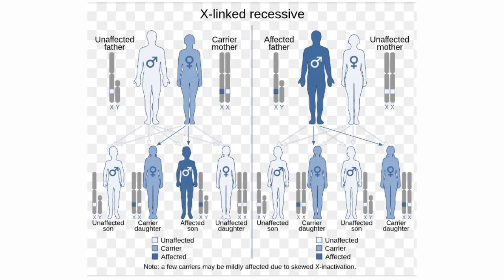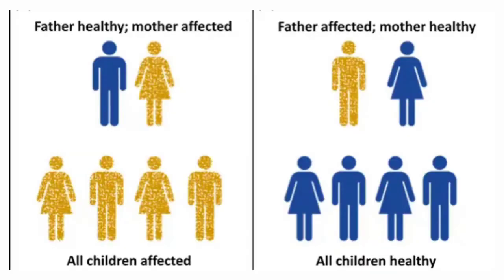If the father is affected and the mother is unaffected, the father cannot pass his X chromosome to sons — only to daughters, who will all be carriers. An important question is whether X-linked recessive traits can manifest in females. The answer is yes — in conditions like X-inactivation (lionization), Turner syndrome (45,X), or when both the father is affected and the mother is a carrier.